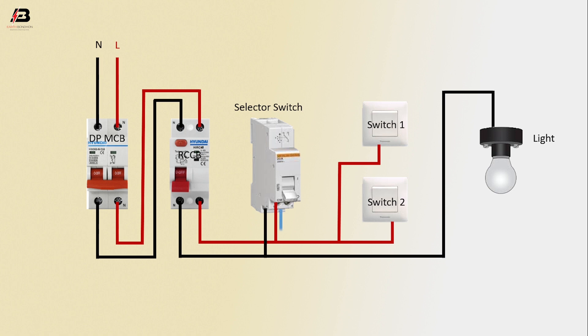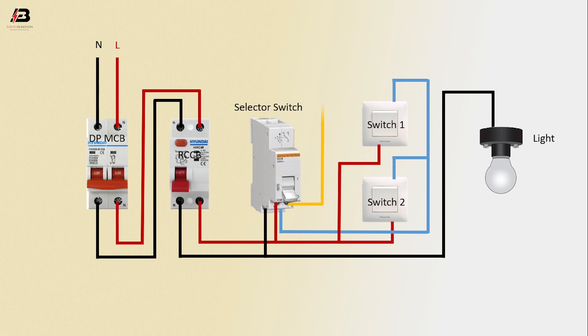Face connection to Switch 1. Output connection from Selector Switch to connect Switch 1. Connection to switch from Selector Switch. Output connection from Selector Switch to connect light. Now this circuit is ready for use.